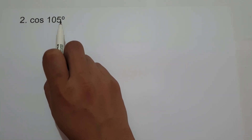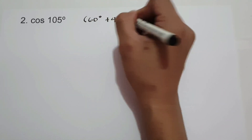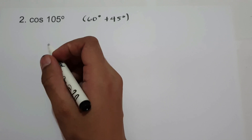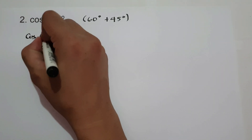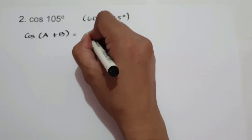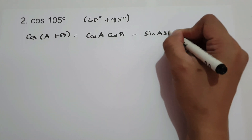On example number 2, we have cosine 105 degrees. How can we find the exact value of cosine 105 degrees? What are the two angles in a unit circle that can be added or subtracted to get 105 degrees? That is 60 degrees plus 45 degrees. If we add 60 degrees and 45 degrees, we get 105 degrees. We are going to use cosine(A+B) = cosine A times cosine B minus sine A times sine B.